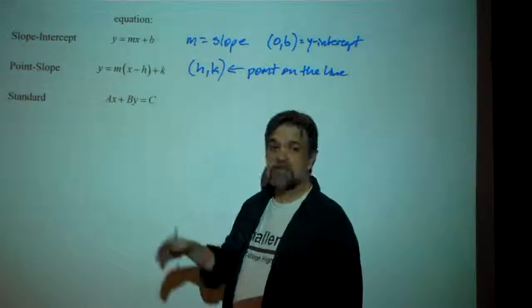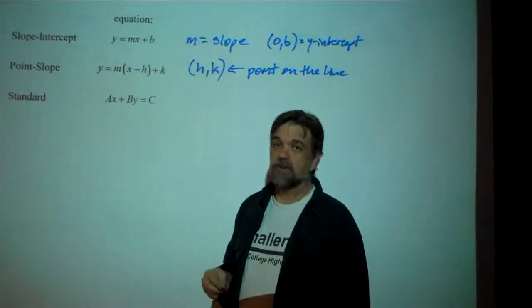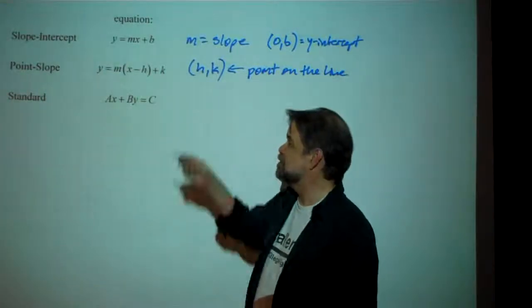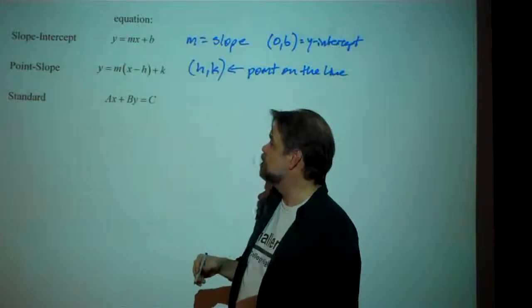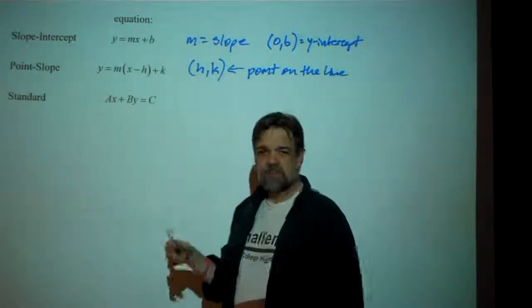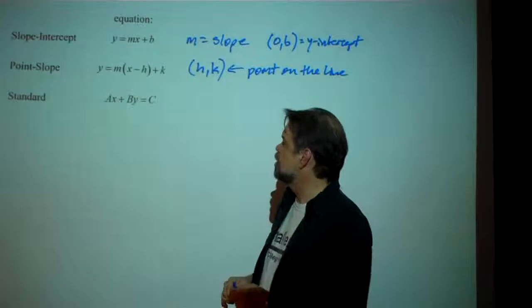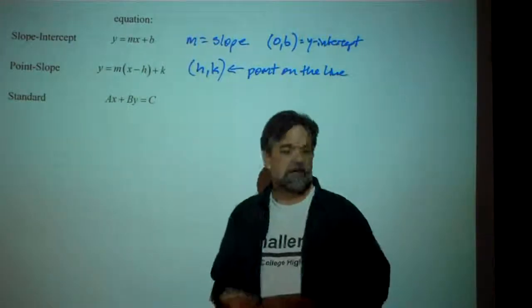If you have irrational numbers for a, b, and c, well, then you're just in bad shape. You can't use the standard form of the equation. You have to go back to slope-intercept or point-slope form. But so let's look at a couple of examples of the standard form of the equation and see what we can do.